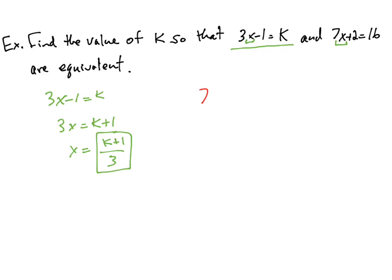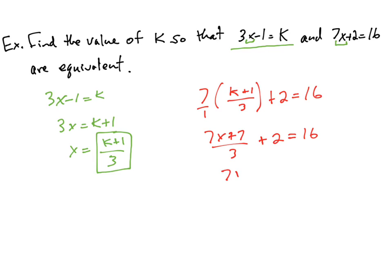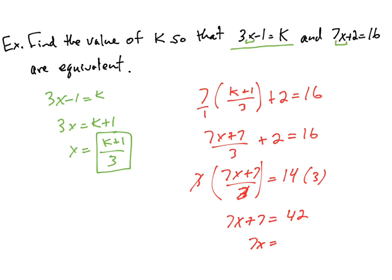Substituting into the second equation: 7 times (k plus 1) over 3 plus 2 equals 16. Distributing the 7 gives 7k plus 7 over 3 plus 2 equals 16. Subtract 2 from both sides to get 14, then multiply both sides by 3 so the 3 cancels, giving 7k plus 7 equals 42. Subtract 7 then divide by 7, and we get k equals 5.